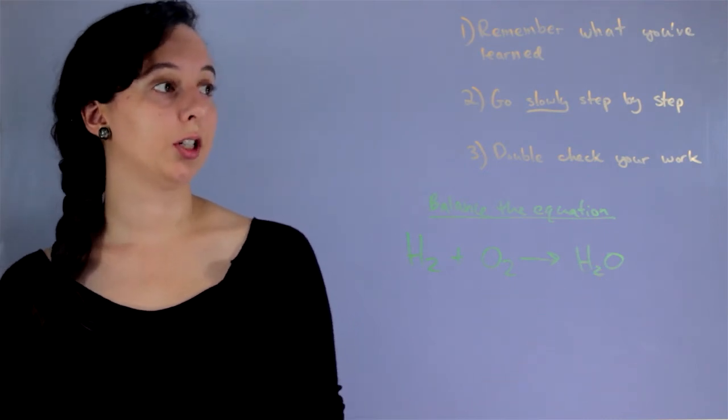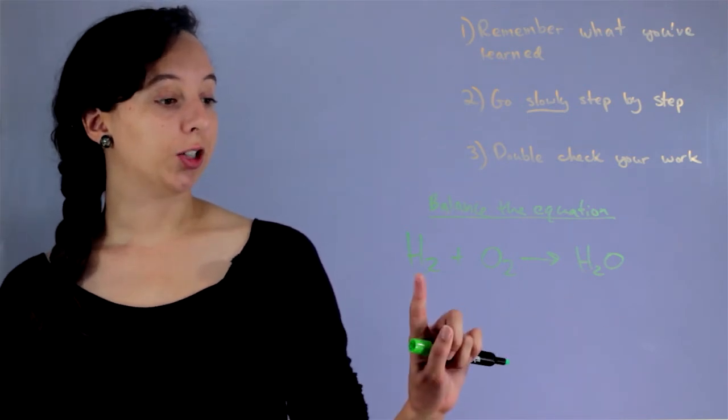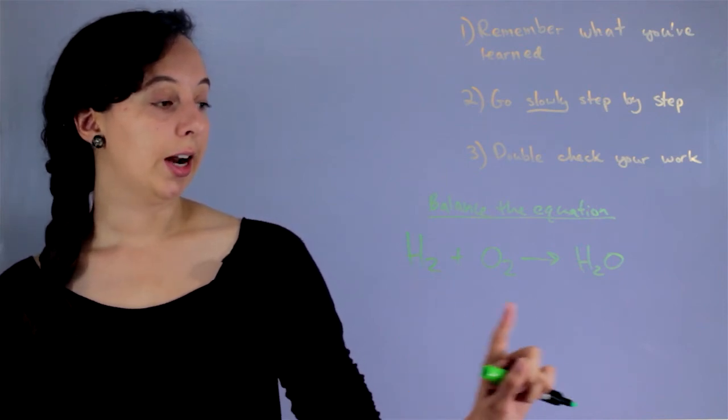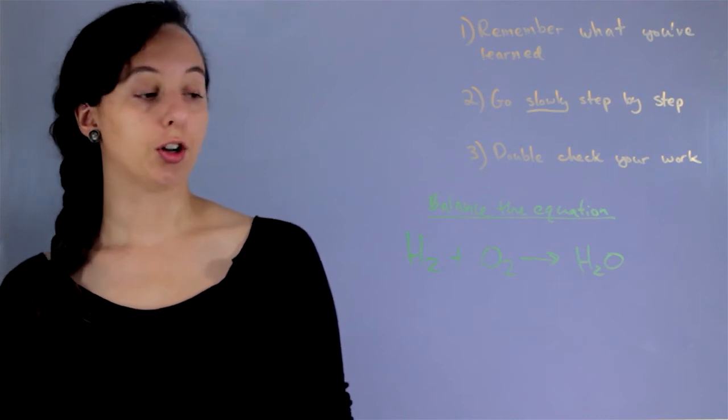So now we're going to go slowly, step by step. So let's start with hydrogen. So there's two hydrogens right now on the left and there's two on the right. So hydrogen right now is balanced. So now let's go to oxygen.